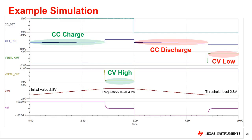On this slide, we show the results when the previously shown circuit is simulated in TINA-TI. V-cell is the battery voltage, and I-cell is the battery current.